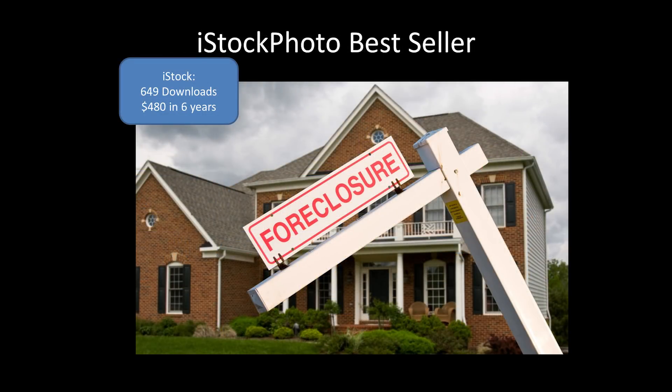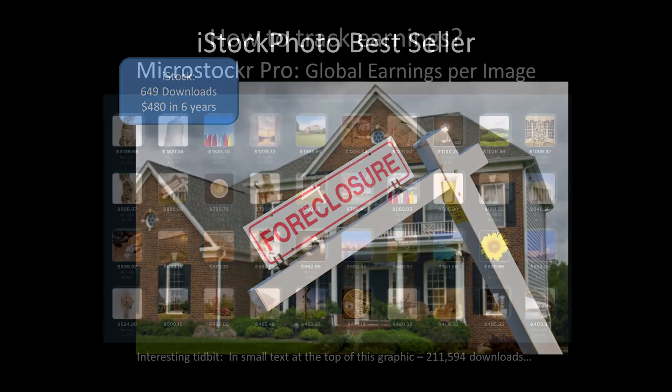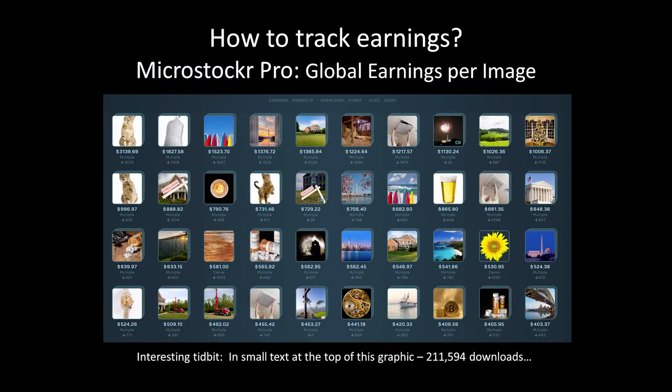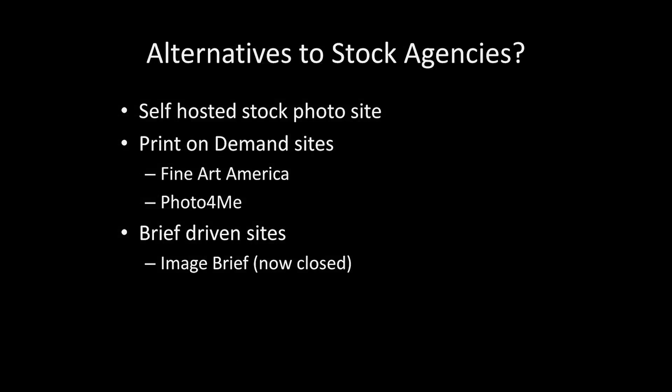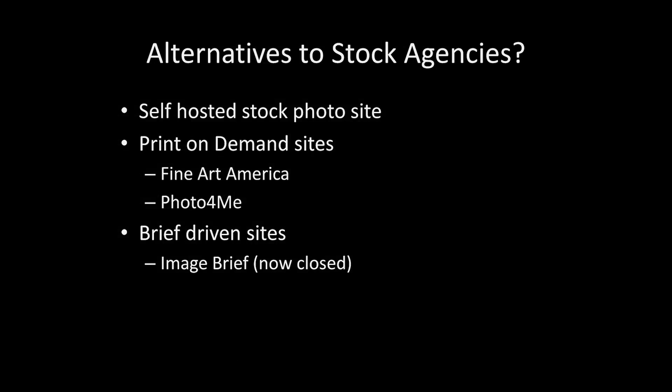There are some good little applications that show you how much individual images sell — I track which of my most popular ones are. One is a bag of ice that has sold $1,800. There are alternatives to stock agencies: you can try to self-host your images, but it's not very successful. There are also print-on-demand sites where people buy a print, the company prints it, ships it, and pays you for the right to use the image.